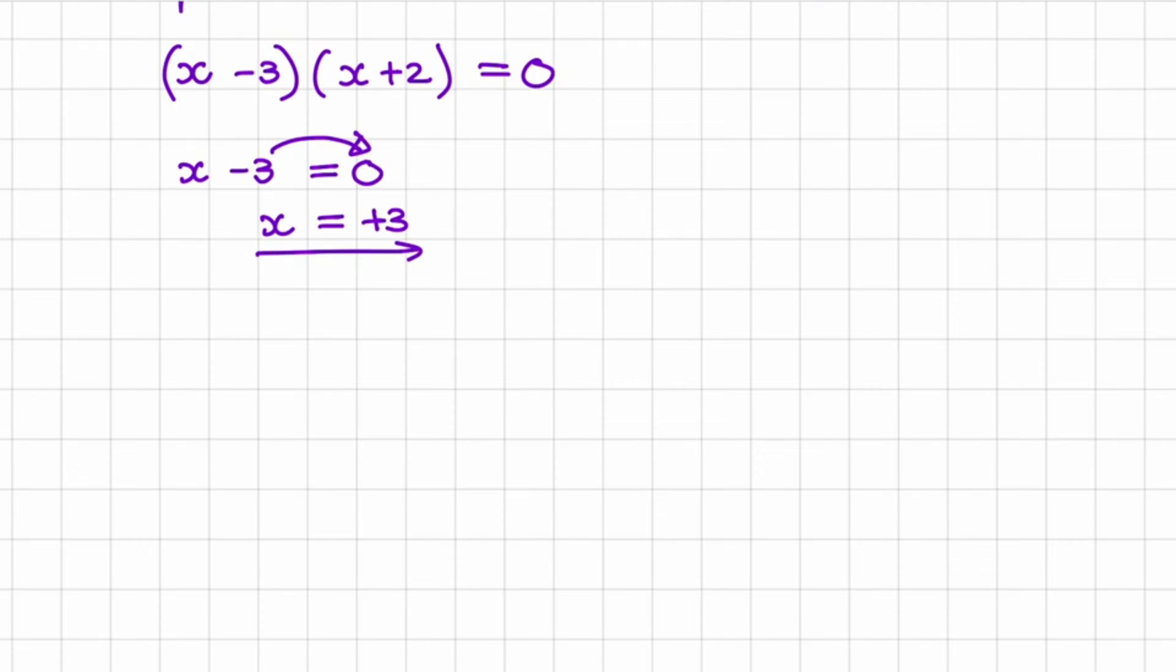So if I want to test, if I replace x with plus 3 everywhere in this equation, it will be 3 - 3 in our first bracket, then 3 + 2 in our second bracket equal to 0.